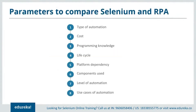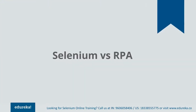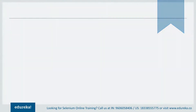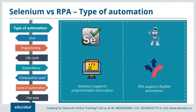Now let's look at the parameters taken into consideration for comparing these two automation tools. We'll compare them based on the type of automation, cost, programming knowledge required, lifecycle, platform dependency, components used, level of automation, and use case. Starting with the type of automation: Selenium supports programmable automation, whereas RPA supports flexible automation. Programmable automation can change the sequence of any operation based on user requirements, whereas flexible automation is a hybrid of fixed and programmable automation.